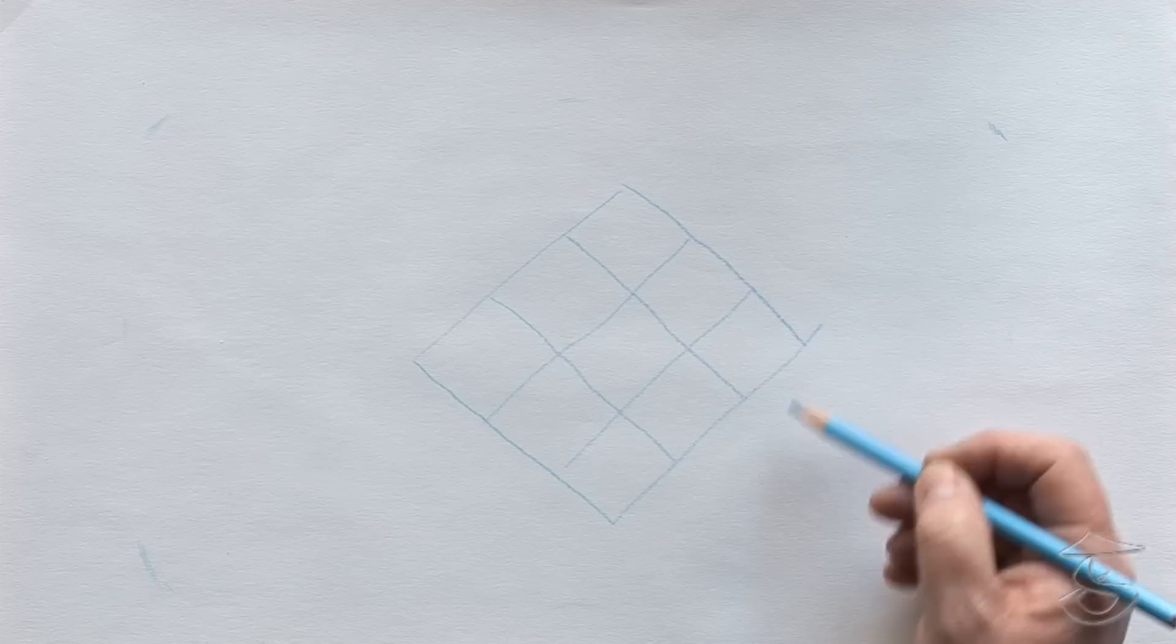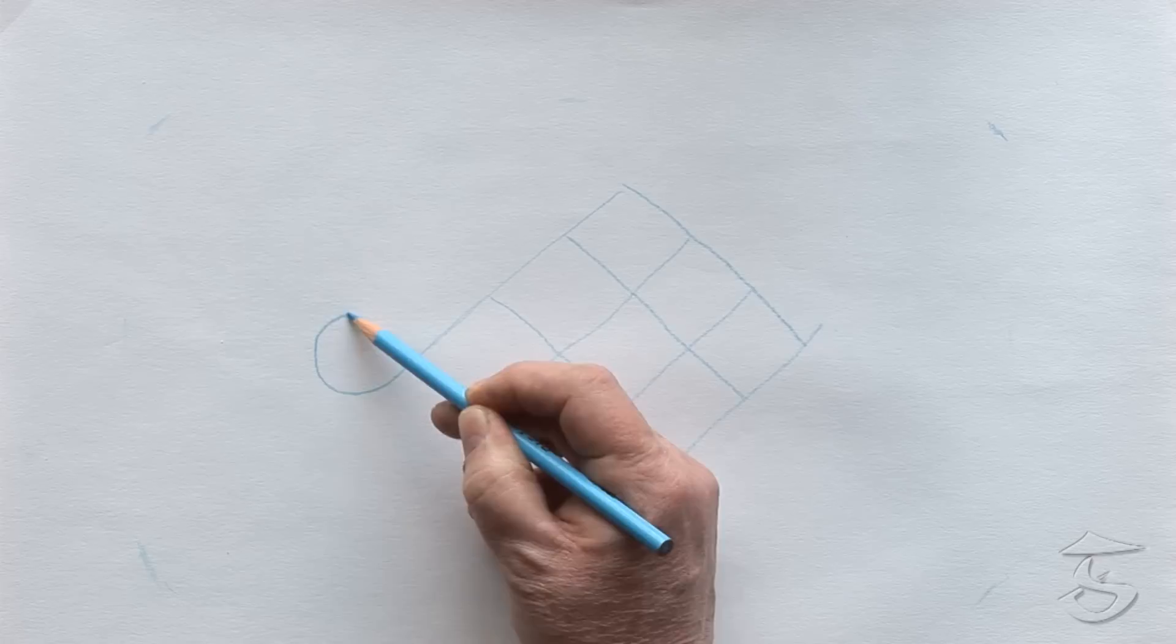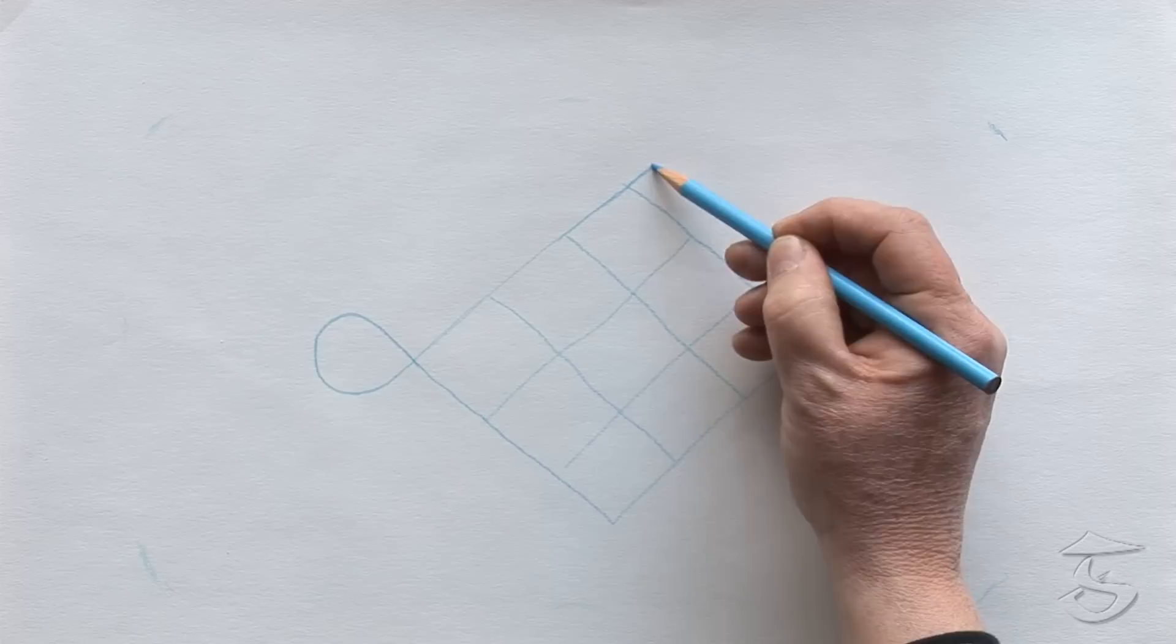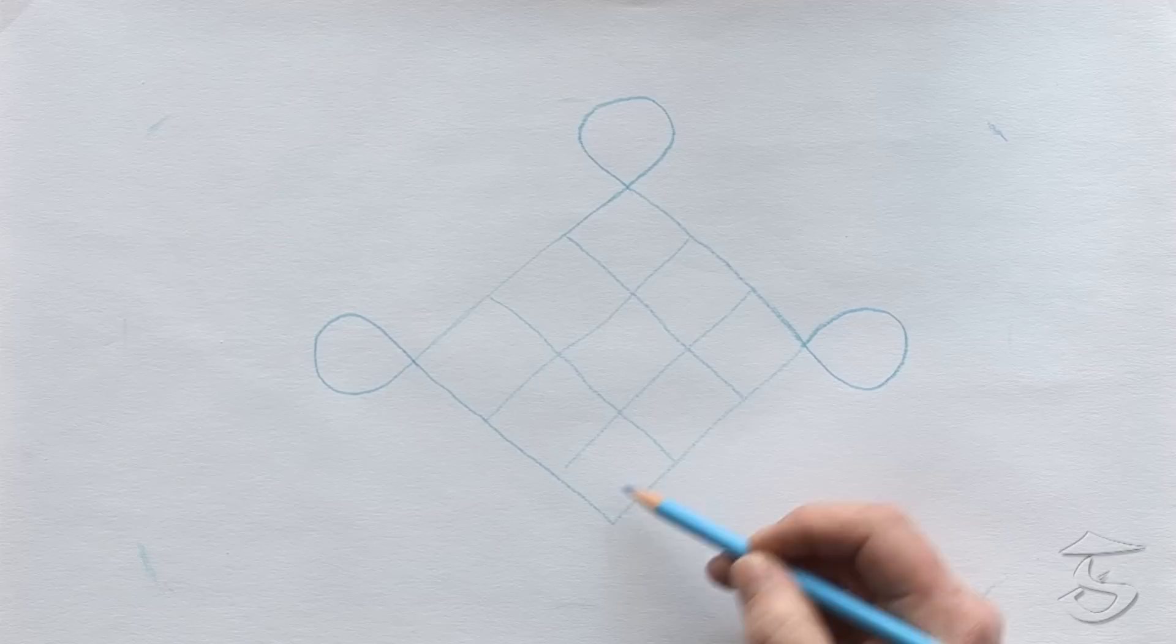Then we work off the corner with a teardrop shape. You don't want to do a circle. You want to do a teardrop. You want to make the circle sort of relative to that size there. We're coming off the other corner. It's like a teardrop shape.